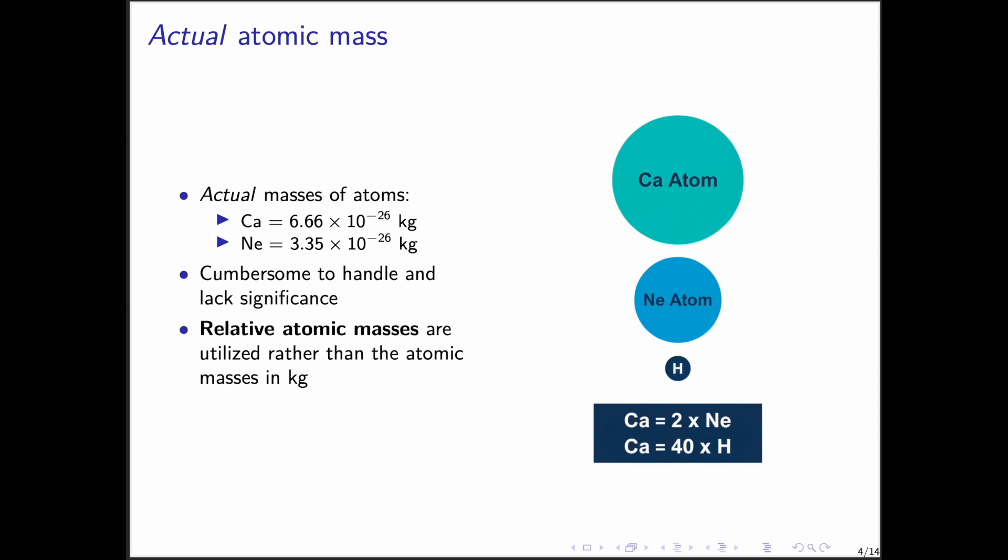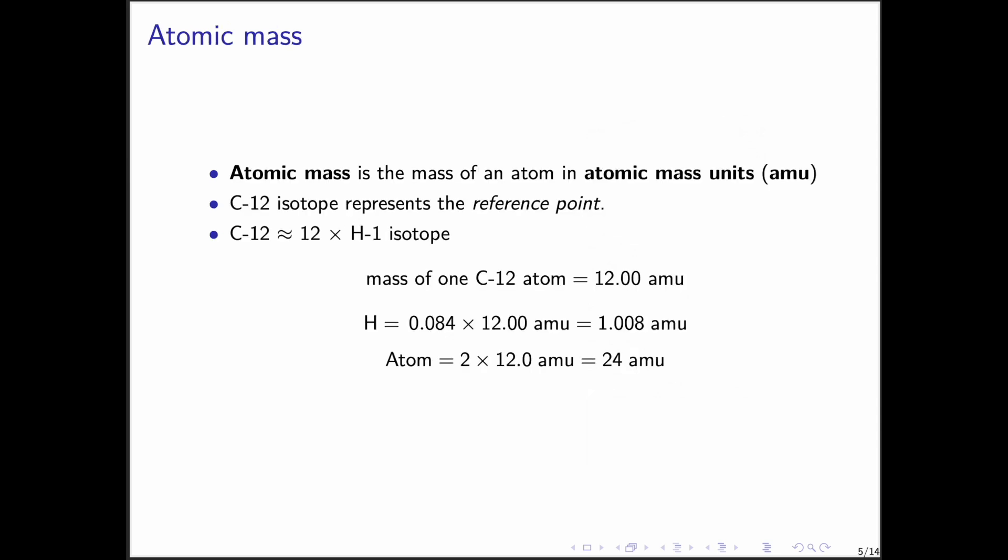That's why, instead of actual atomic masses, chemists use relative atomic masses. The relative atomic mass is expressed in units called atomic mass units, or AMU. This scale is based on the carbon-12 isotope, which has been assigned an exact mass of 12.00 atomic mass units.